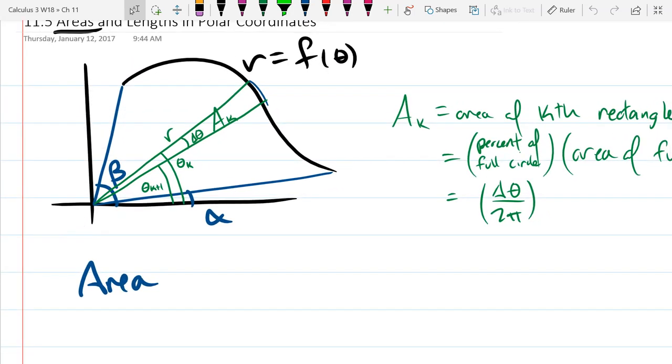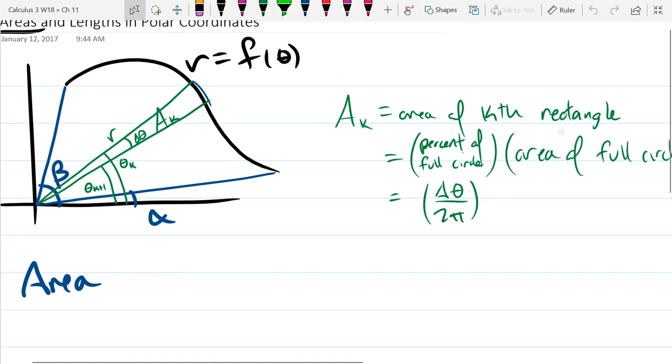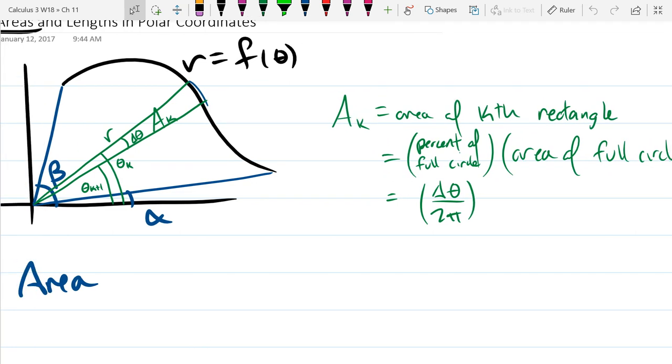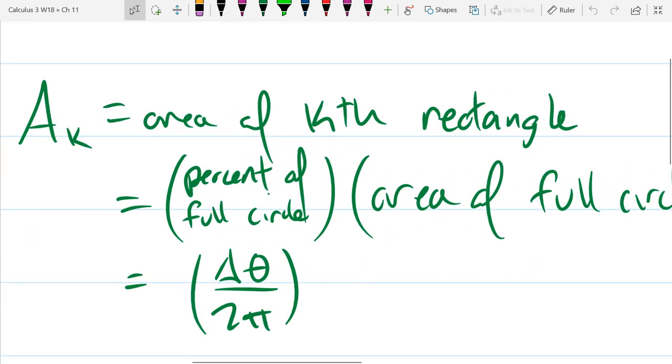Hopefully I convinced you rectangles and areas of polar rectangles are tricky. So we're going to go a little bit further into getting these areas. We saw it was an area of a full circle, but then you have to multiply by the percentage of a full circle angle. So that's how we got this area right here.